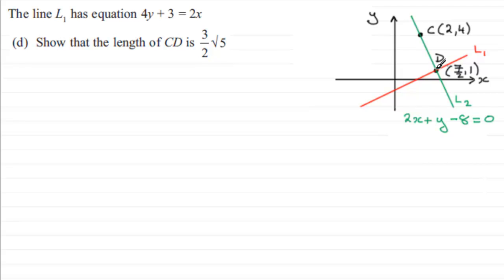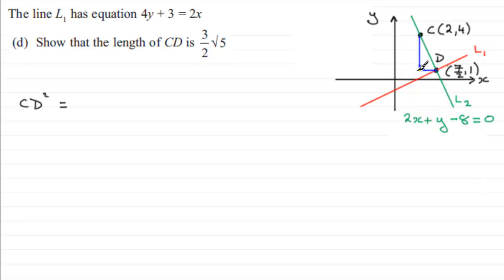To find that distance we use Pythagoras's theorem. We consider essentially a right angle triangle drawn across from C to D. We know that CD squared — the hypotenuse squared — is equal to the sum of the squares of the other two shorter sides.